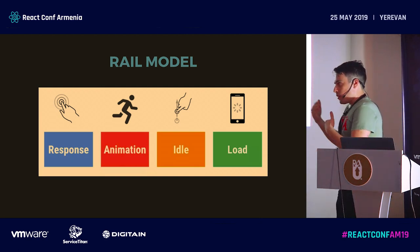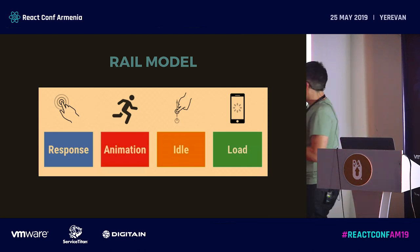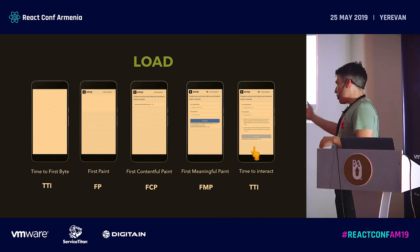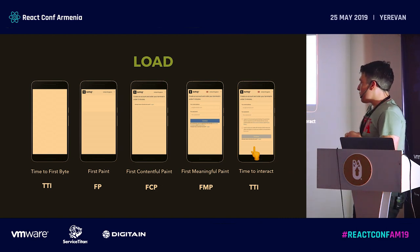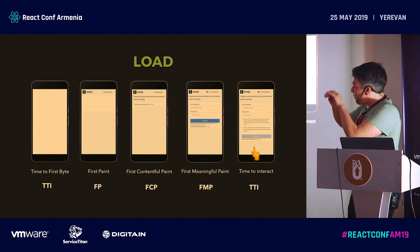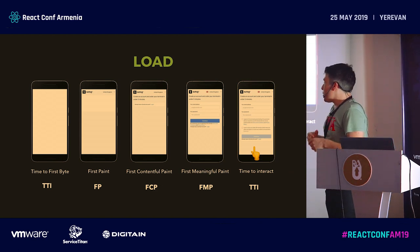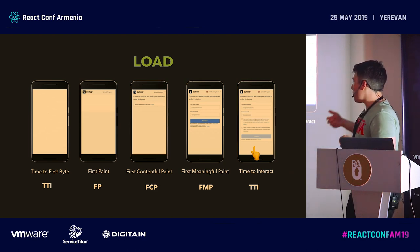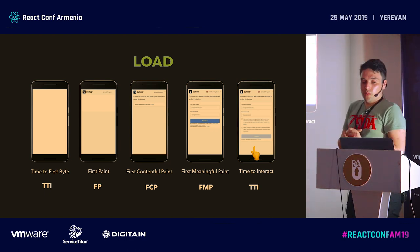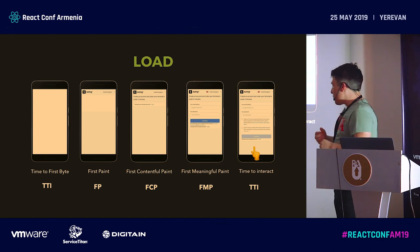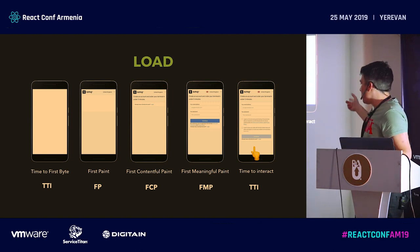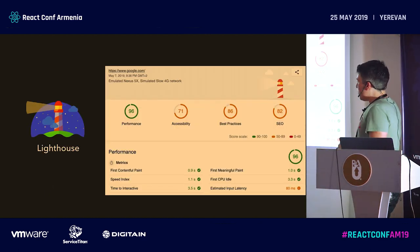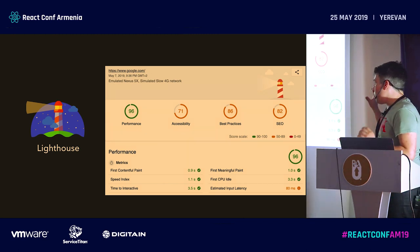In the RAIL model: Response is how long it takes for something to happen after a user interaction; Animation requires at least 60 frames per second to feel natural; Idle is what you do when the user is not doing anything — you can fetch stuff, send things to Google Analytics; and Load time is from when the user enters your page until something loads on the screen. You can break load time into sub-metrics: Time to First Byte, First Paint, First Contentful Paint, First Meaningful Paint — which is the most important part of your website — and Time to Interactive, which is when everything is loaded and the user can interact.